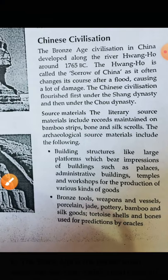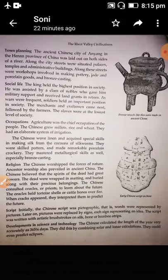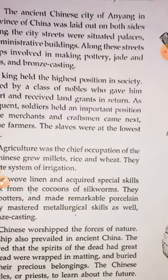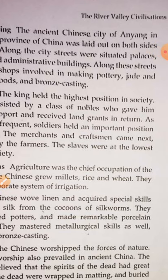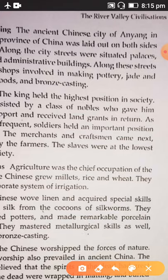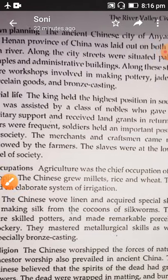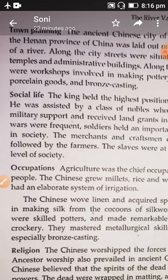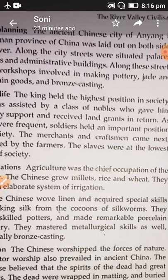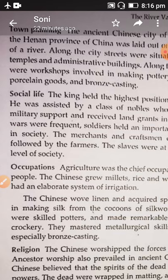In town planning, along the city streets were situated palaces, administrative buildings, and temples. Along these streets were also workshops involved in making pottery, jade and porcelain goods, and bronze casting. China is well known for these different crafts.